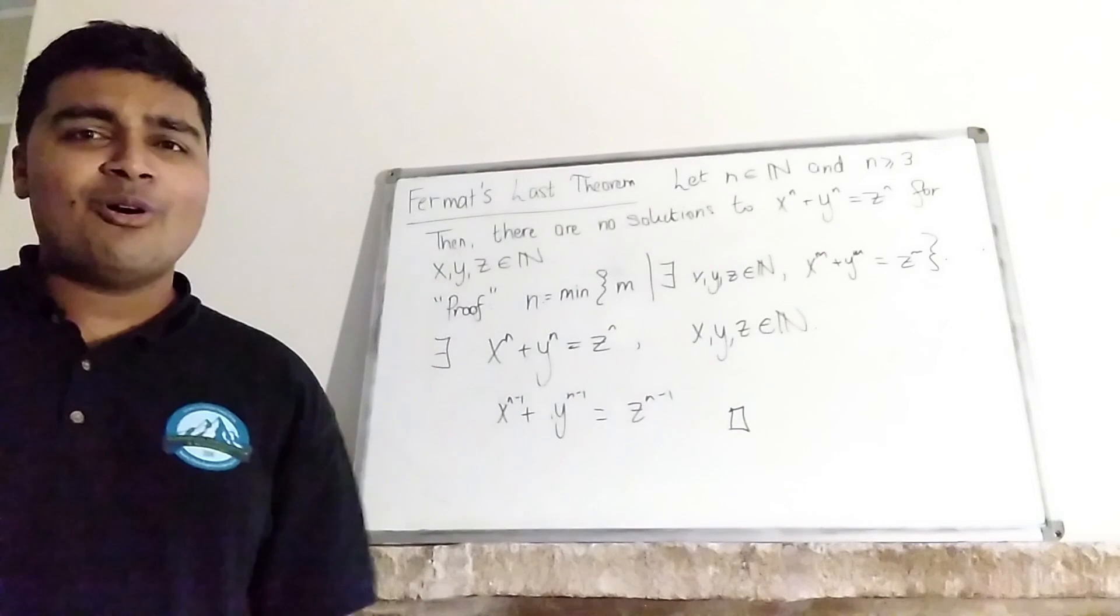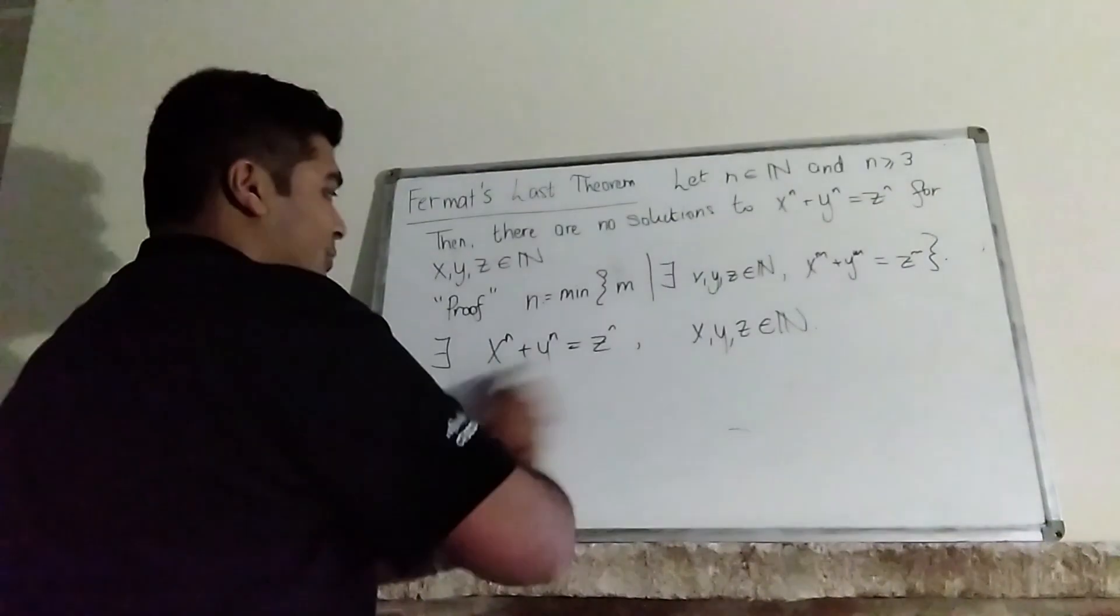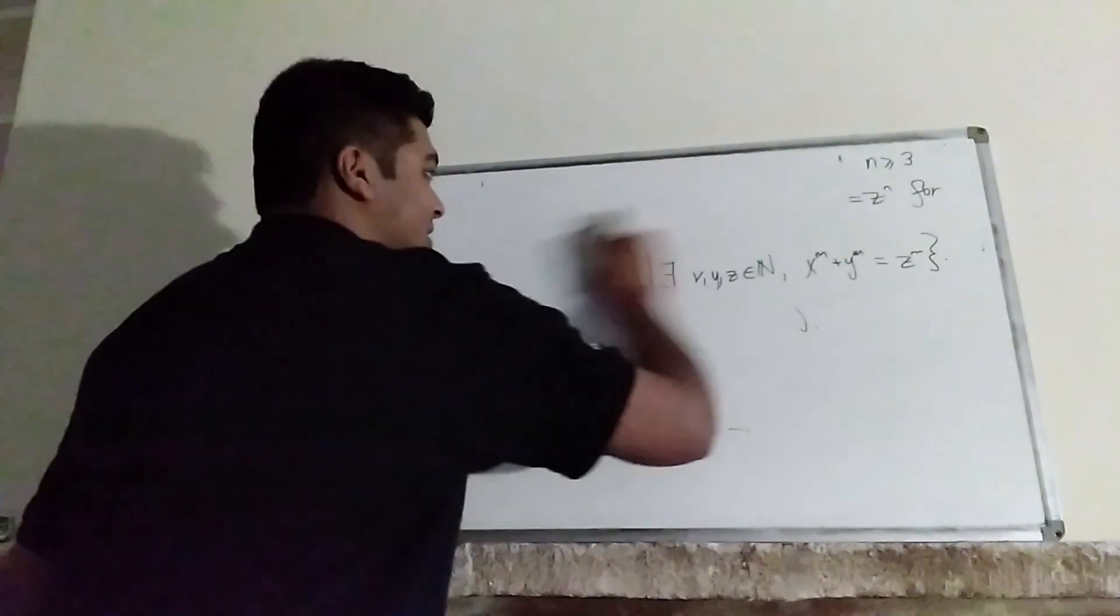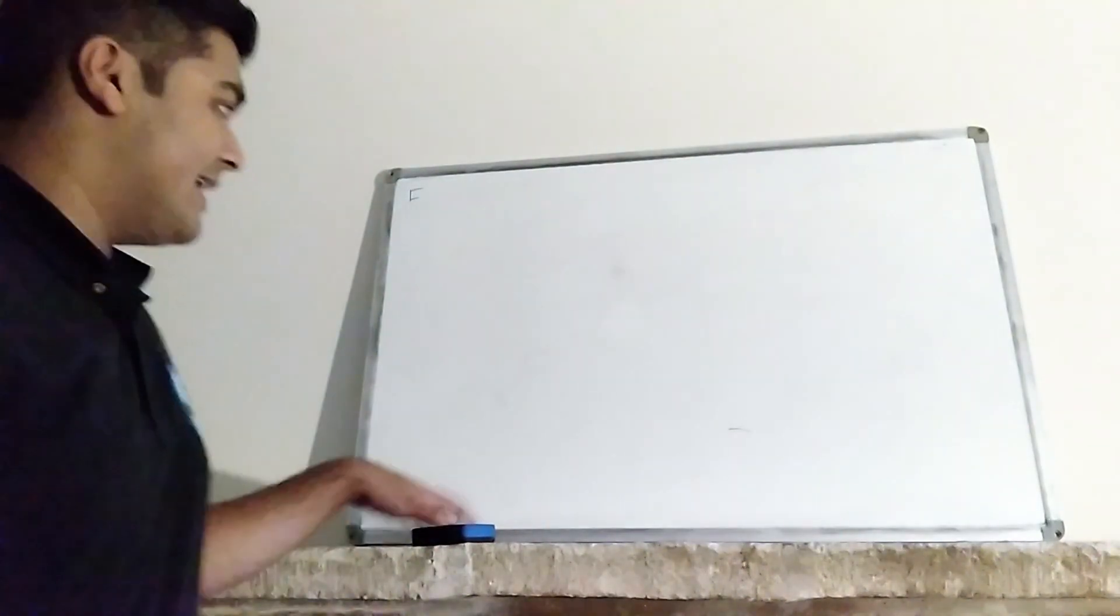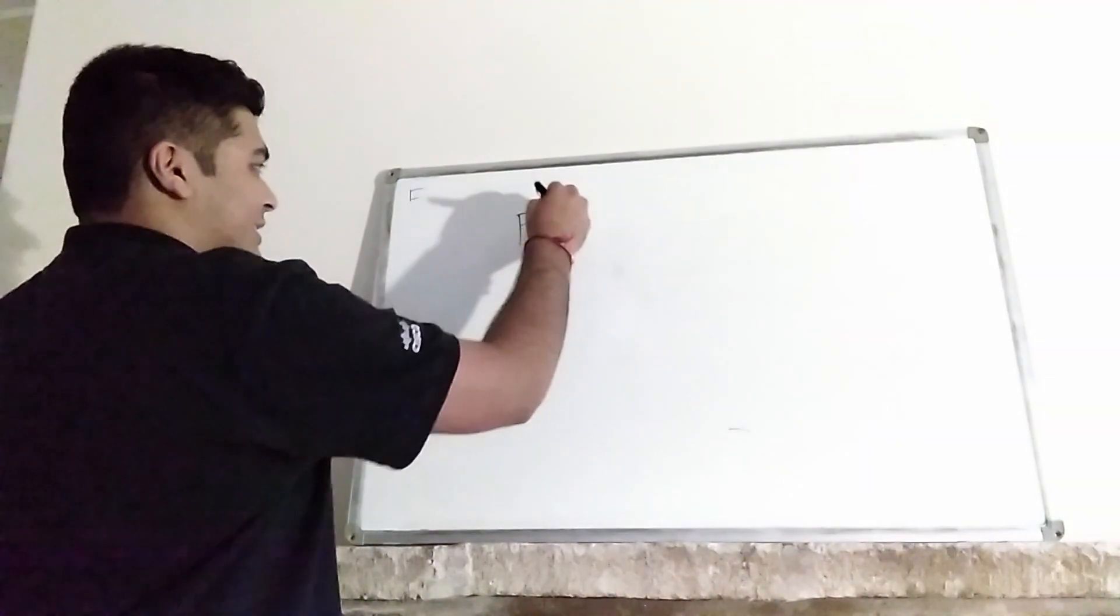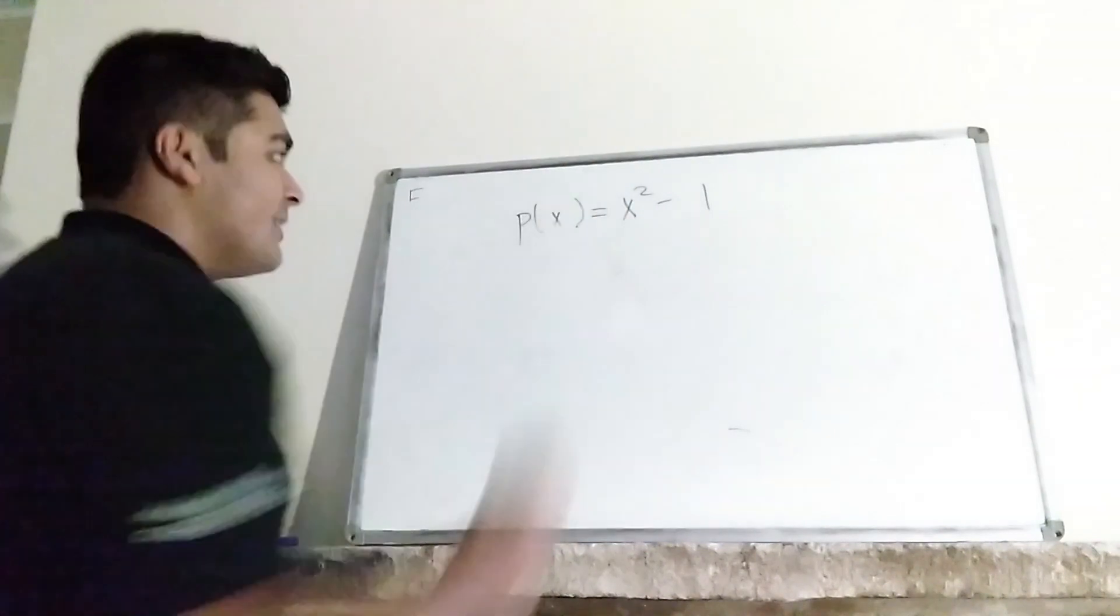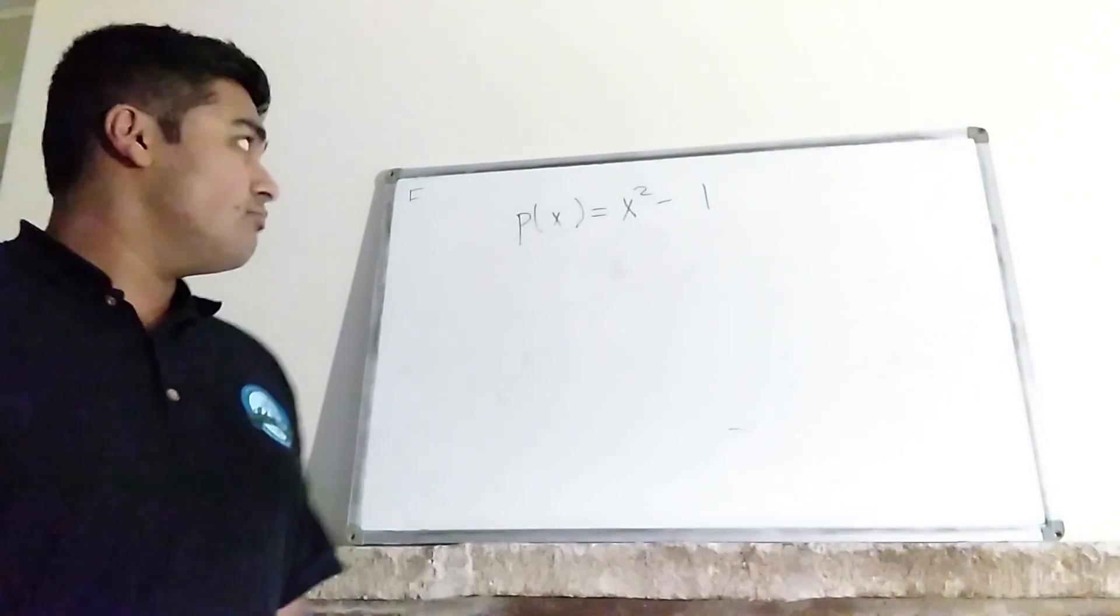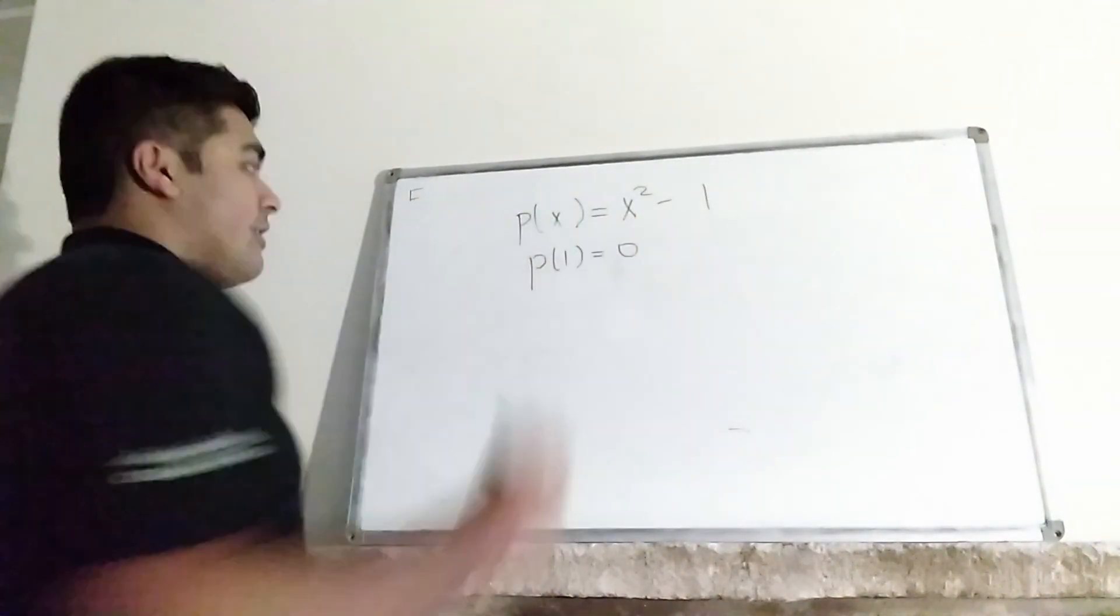Now let me give you an example of that. Let's look at the polynomial equation p(x) = x^2 - 1. So obviously this has a root 1, so p(1) = 0. But that doesn't imply that p'(1) = 0.